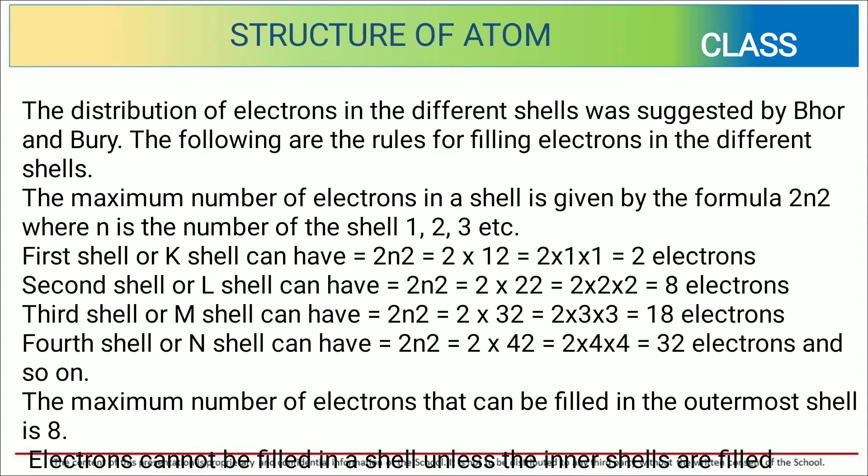The maximum number of electrons in a shell is given by formula 2n², where n is the number of shell, that is 1, 2, 3, etc. So while putting the values in 2n², we get the value as 2, 8, 18, 32. Just we have to change the value of n.